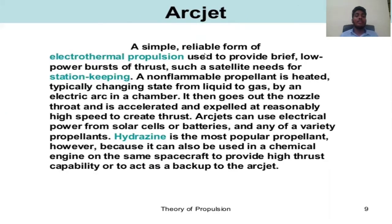Arc jet: a simple reliable electrothermal propulsion used to provide brief bursts of thrust, such as satellites need for station keeping. A non-flammable propellant is heated — typically changing state from liquid to gas — by an electric arc in a chamber. It then exits through the nozzle and is accelerated and expelled at high speed to create thrust. Arc jets can use electrical power from solar cells and battery, and any of a variety of propellants. Hydrogen is the most popular propellant, as it can also be used in a chemical engine on the same spacecraft.